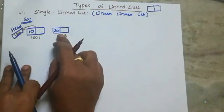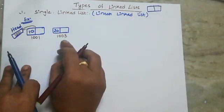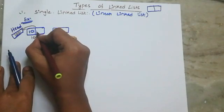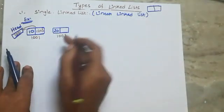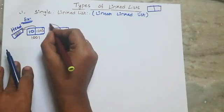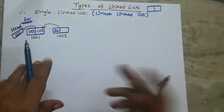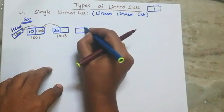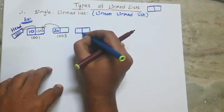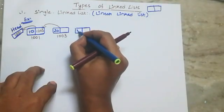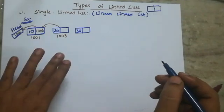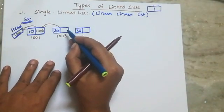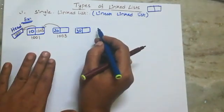The next node value is 10. The next node is 20. The address is 1003, so we will store 1003 in the first node's address part. I will place data element 30. So 10, then 20, then 30. Now the address part of node 20 we will place null.